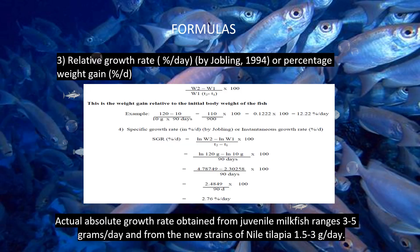The third formula is the relative growth rate, expressed in percent per day or percentage weight gain. The formula is: Weight 2 minus Weight 1 over Weight 1, multiplied by 1 over T2 minus T1, times 100. This represents the weight gain relative to the initial body weight of the fish.